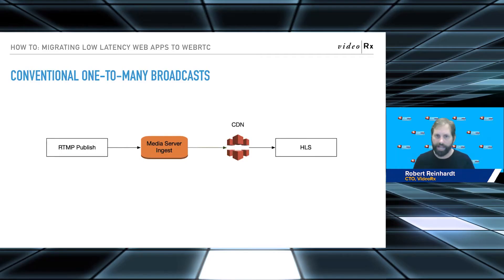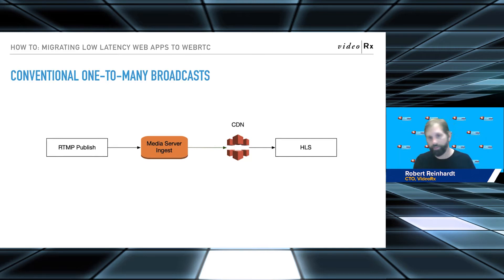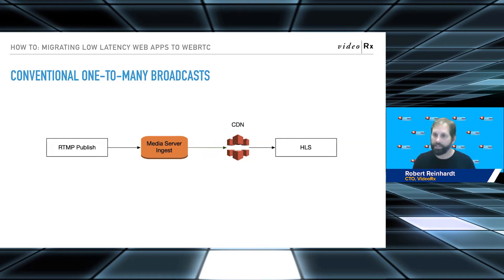Conventional one-to-many broadcasts look a lot like this, and this is still what a lot of setups are doing. We have one RTMP publish going into some kind of media server ingest, there's a CDN in front of it taking care of all your HTTP edge caching, and it's going out to HLS. That's a tried and true workflow.